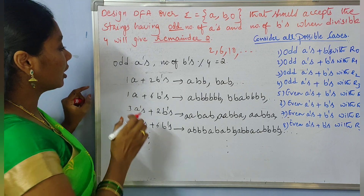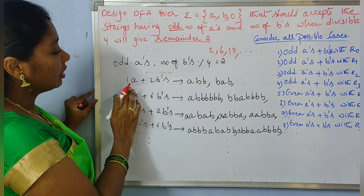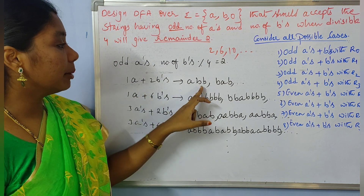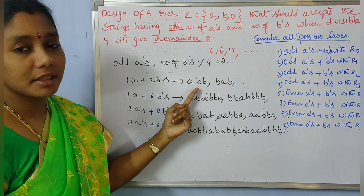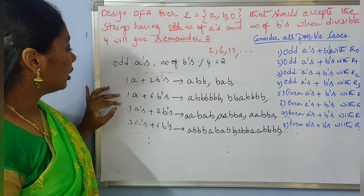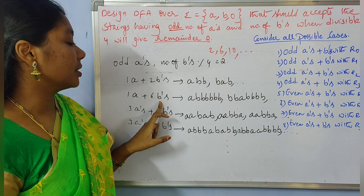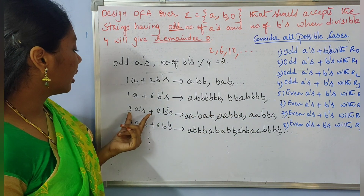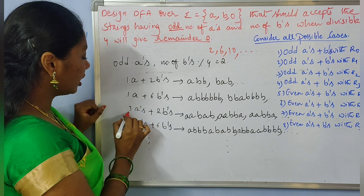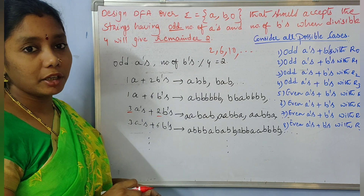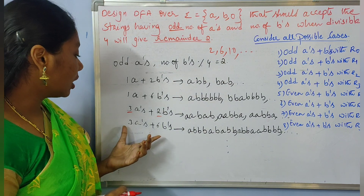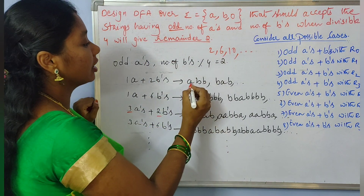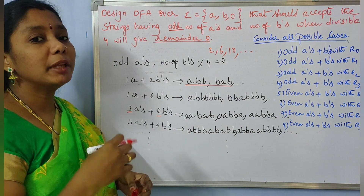In our language we can have strings with 1 A and 2 B's — this is the minimal string combination. Strings can be formed like A, B, B or B, A, B, etc. Similarly, we can have 1 A and 6 B's, or 3 A's and 2 B's, or 3 A's and 6 B's. All these are possible strings under our language, with the minimal string consisting of at least 1 A and a minimum of 2 B's.